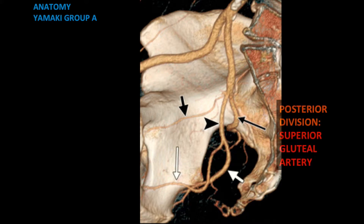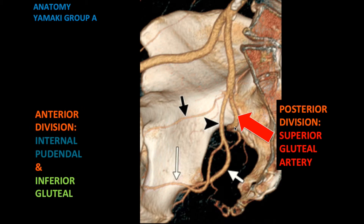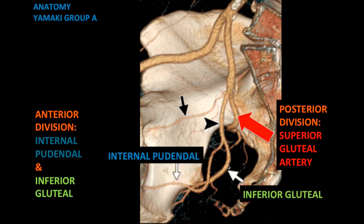The posterior branch is the superior gluteal artery, shown here by the big red arrow. We also have the anterior branch, which is the common trunk seen here, and it later bifurcates into an anterior branch — the internal pudendal artery — and a posterior branch, which is the inferior gluteal artery.